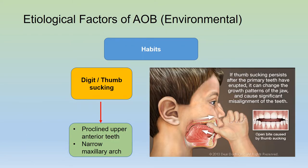The environmental factors include habits, usually digit or thumb sucking habits. This causes the upper anterior teeth to become proclined and the maxillary arch to become narrow, which results in an open bite relationship.